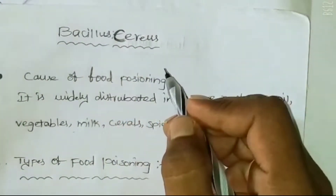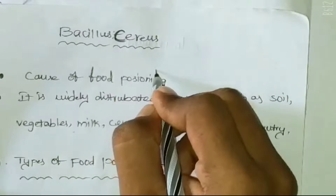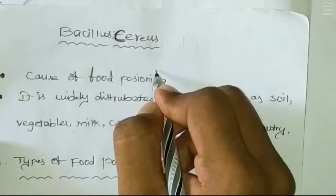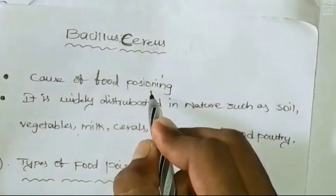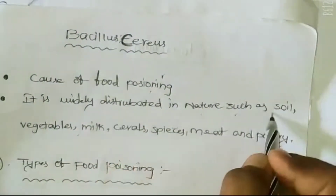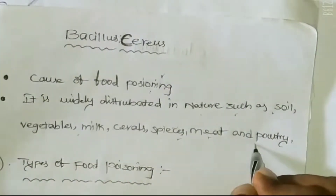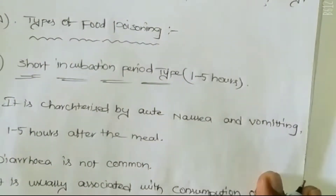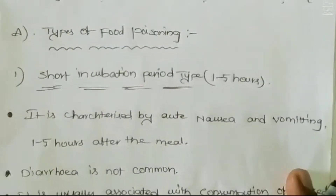Good morning friends. Today I perform this video for microbiology first year. The topic is Bacillus cereus, which is a commonly cause of food poisoning. It is widely distributed in nature such as soil, vegetables, milk, cereals, meat and poultry. There are two types of food poisoning caused by this Bacillus.